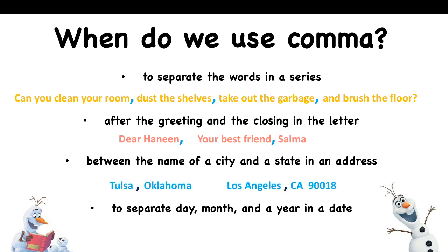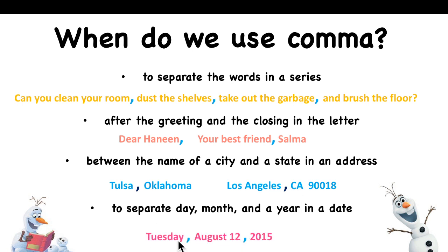Between the name of a city and a state: Tulsa, Oklahoma — comma between city and state. Or Los Angeles, California 90018 — comma between city and state, not between state and zip code. And for dates: if we have a day, separate it from the month with a comma; if we have a month, separate it from the year with a comma. The day number is included with the month.